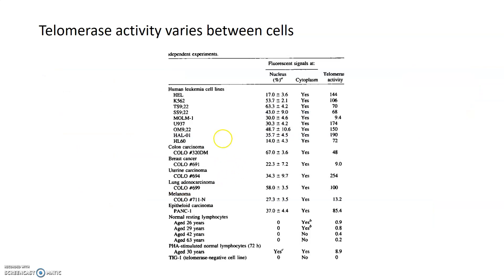Telomerase activity varies between cells, and in most cases telomerase is relatively non-active. Some cell lines — cells grown in vitro in dishes — do have telomerase activity. Several leukemia lines as well as other types of cancer have rather high telomerase activity. Normal resting lymphocytes compared to these cell lines have very little, almost negligible telomerase activity. And as these lymphocytes or normal cells age from 26 to 63 years, telomerase activity declines even more.